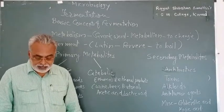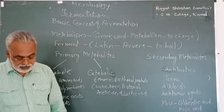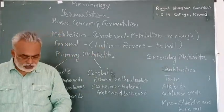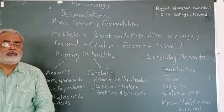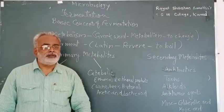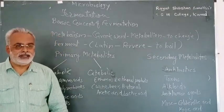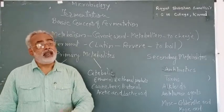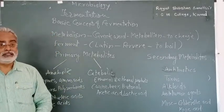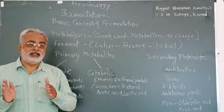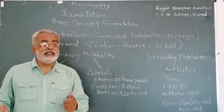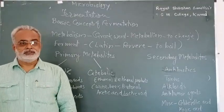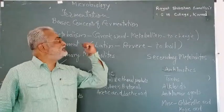Anti-tumor agents required for cancer treatment, like actinomycins or bleomycin, are produced by microorganisms as secondary metabolites. Miscellaneous compounds useful in agricultural practices like gibberellic acid and kojic acid are also examples of secondary metabolites. Generally, microorganisms produce primary metabolites in large quantities and their extraction is comparatively easy, whereas secondary metabolites are produced in lesser quantities and their extraction is very difficult.